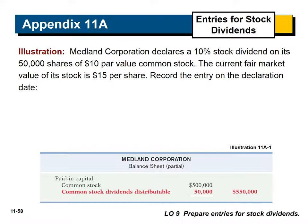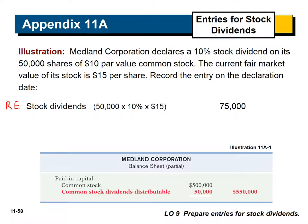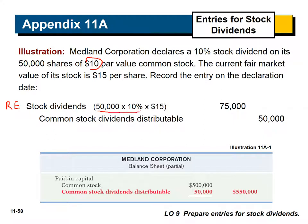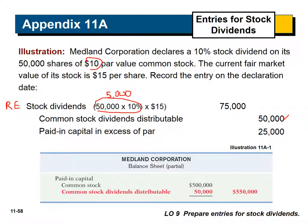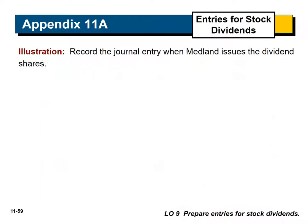Finally, the journal entries for stock dividends. They declare a 10% stock dividend on 50,000 shares of $10 par value common stock when fair value is $15. On the declaration date, debit stock dividends for $75,000; credit common stock distributable for $50,000 (5,000 shares × $10 par), and credit paid-in capital in excess of par for $25,000 (the additional $5 per share). When you actually distribute, debit common stock distributable and credit common stock for $50,000.